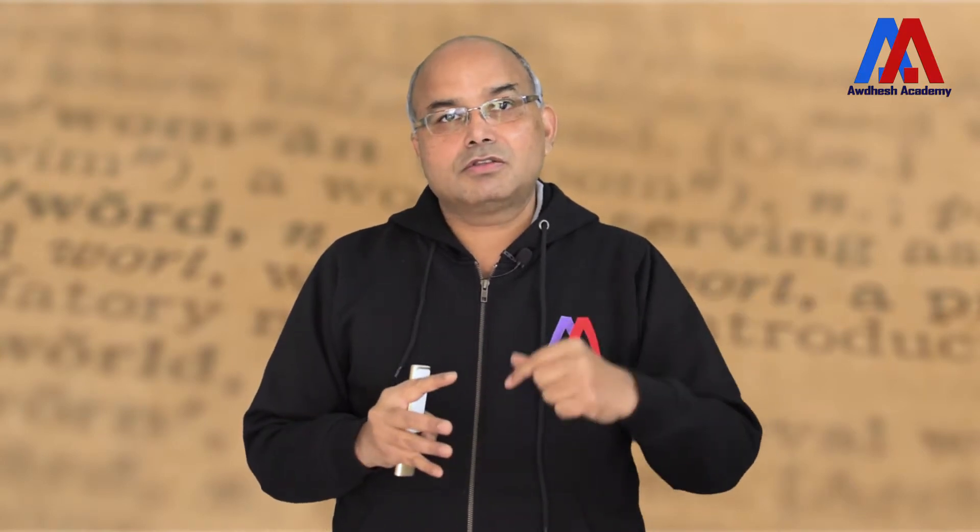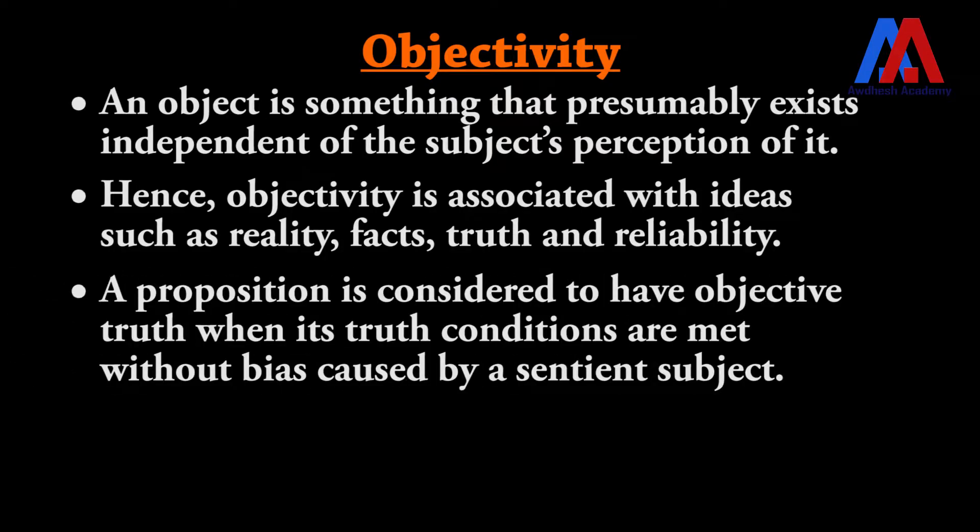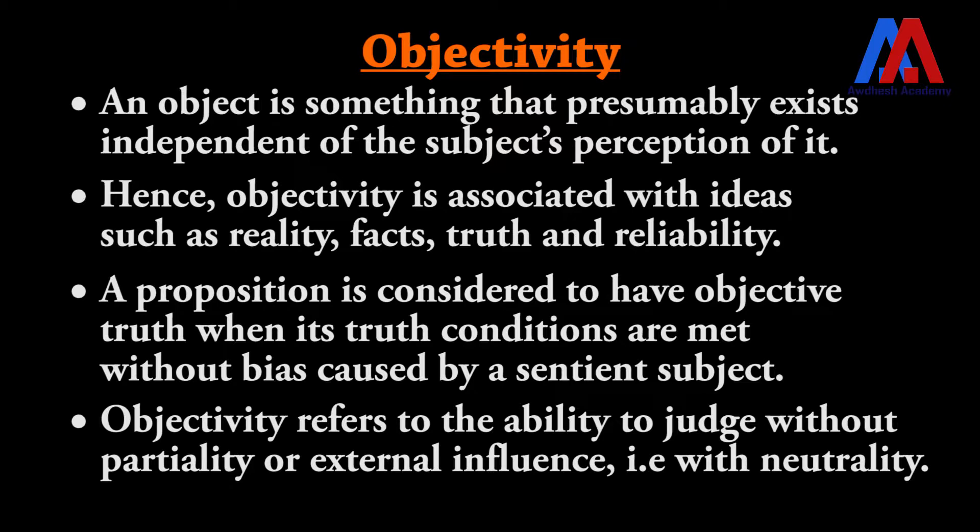These objects have to be perceived. When I see something, I make a perception of it, and that perception may be different for every person. Subjectivity is something which is actually part of the object and also represents part of me — when you know what I perceive, you know both the object and what type of person I am. A proposition is considered to have objective truth when its truth conditions are met without bias caused by the subject or that person. Objectivity refers to the ability to judge without partiality or external influence — that is, to judge with neutrality.